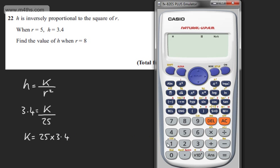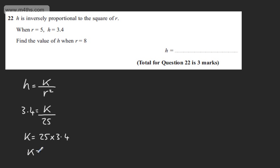We can put this in the calculator. So 25 times 3.4 gives us the value of K, and that is 85. So K is 85.